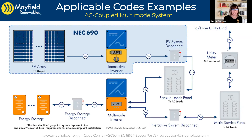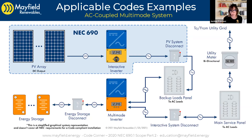The first one we're looking at here is an AC coupled system. Before I go diving into this diagram and how the code applies, I just want to back up a minute and talk a little bit about these systems and why they're employed or where you see them most commonly. Essentially, with an AC coupled system, they're most often installed when there's an existing PV system on site and you want to add energy storage later. That's the most common application.